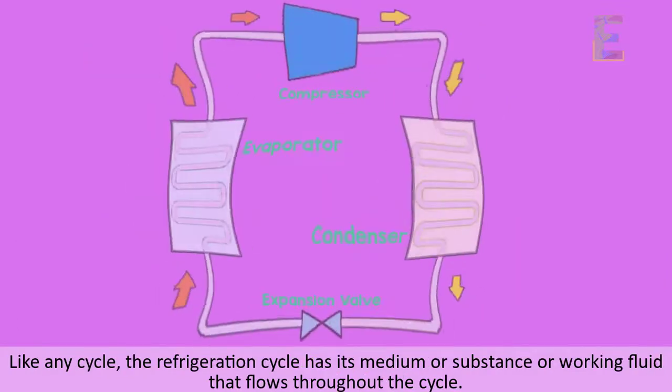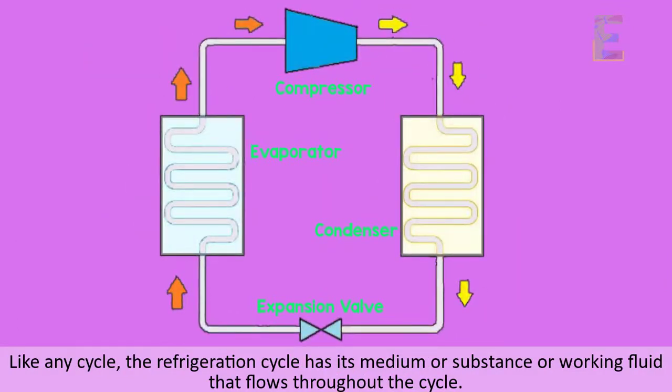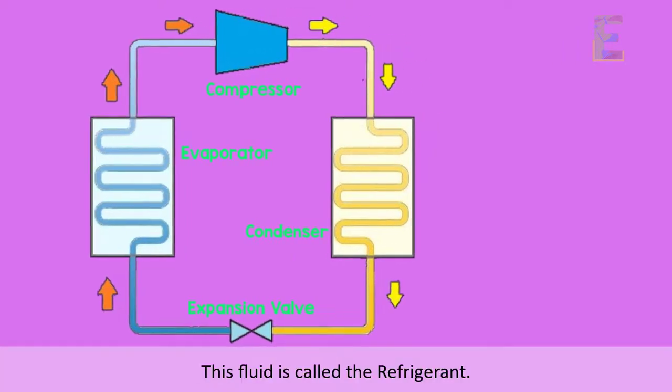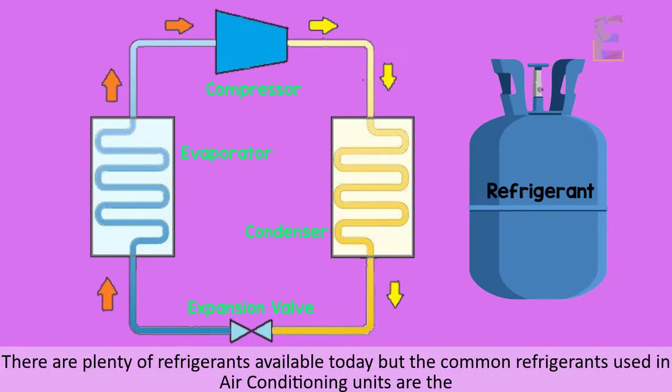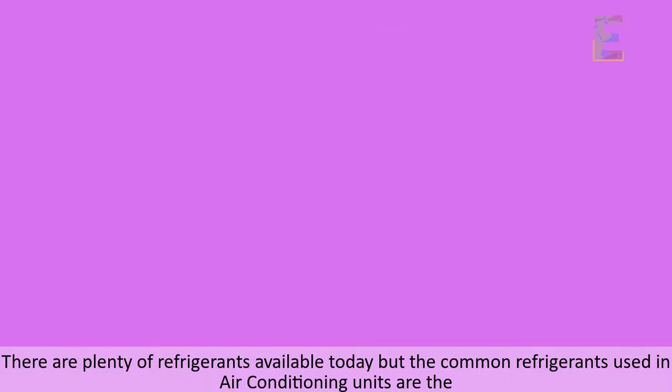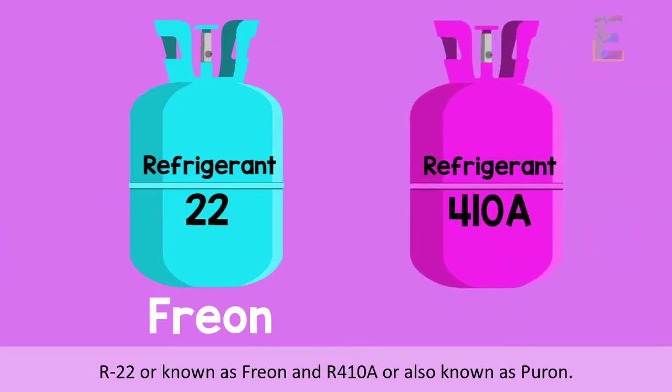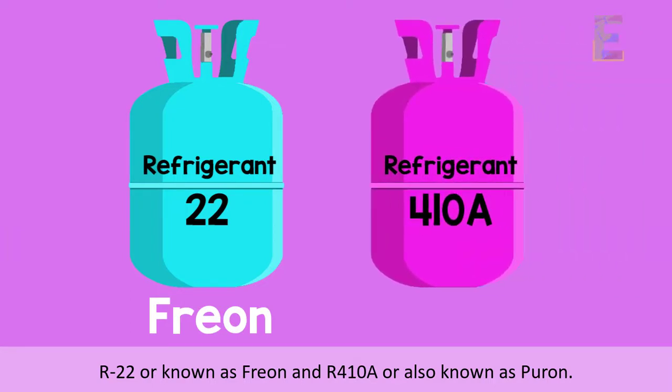Like any cycle, the refrigeration cycle has its medium or substance or working fluid that flows throughout the cycle. This fluid is called the refrigerant. There are plenty of refrigerants available today, but the common refrigerants used in air conditioning units are the R-22, or known as Freon, and R-410A, or also known as Puron.